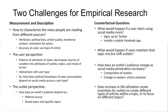Some more qualitative questions that motivate what we want to do: what would happen if a user starts using social media more — maybe around the Boston Marathon, they sign up for Twitter and start reading news from Twitter where they didn't before? What if users maintain their topic mix but shift outlets? How does an audience change as social media penetration increases, and does the increase in social media utilization create incentives for outlets to create different types of articles?